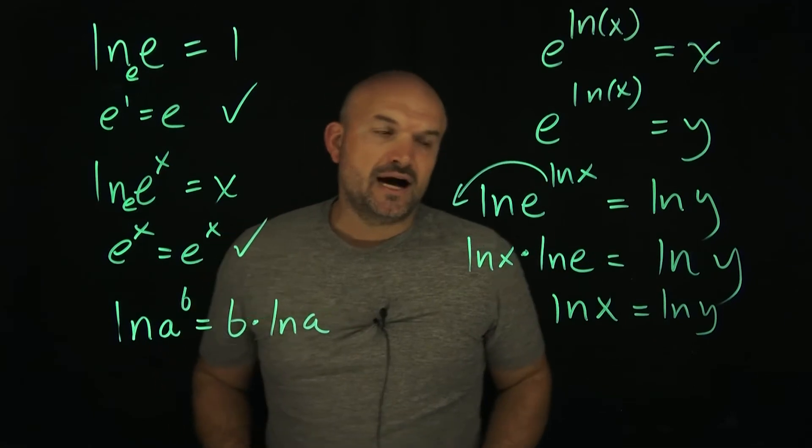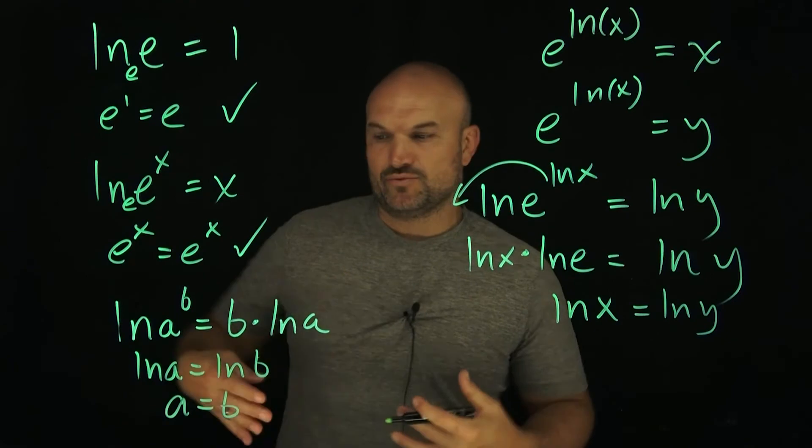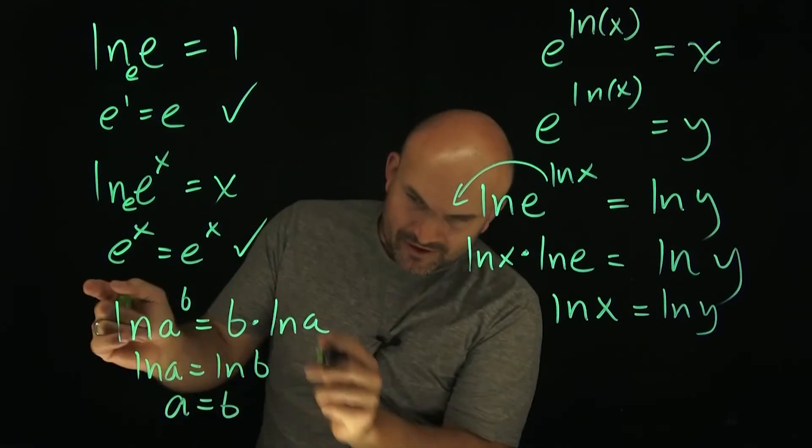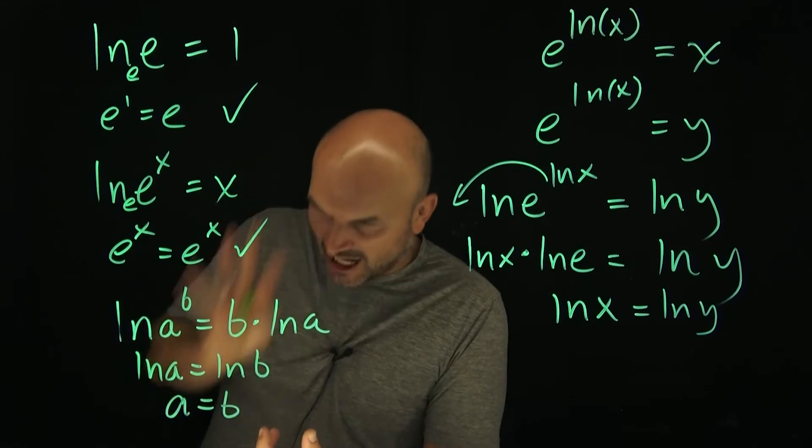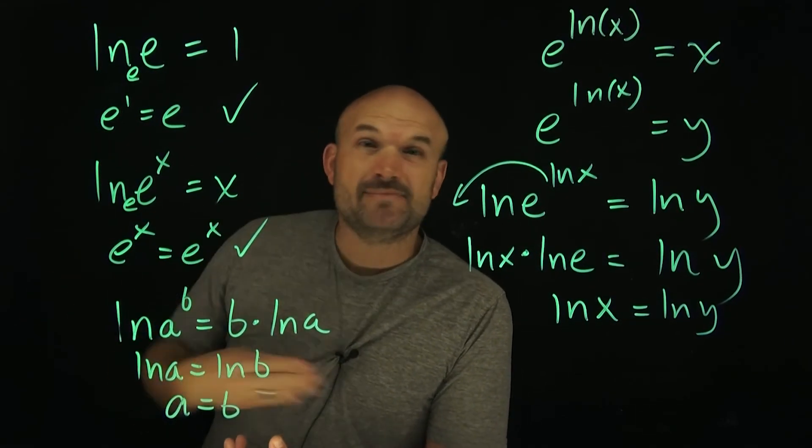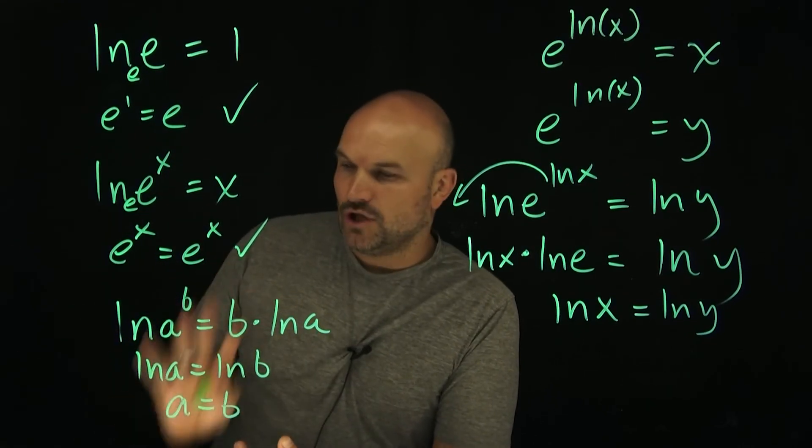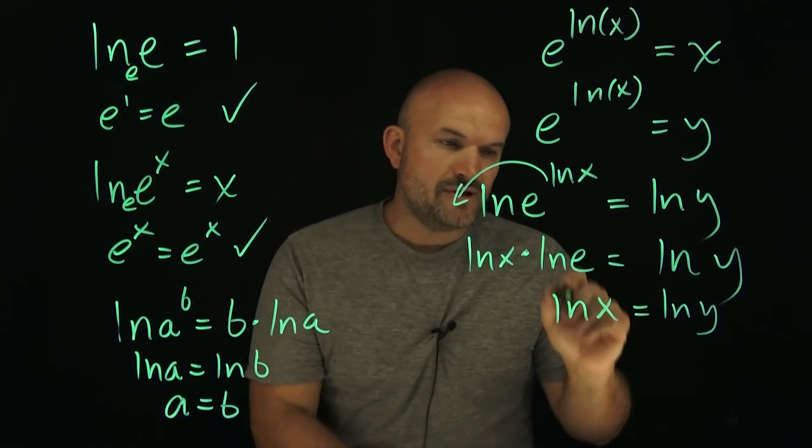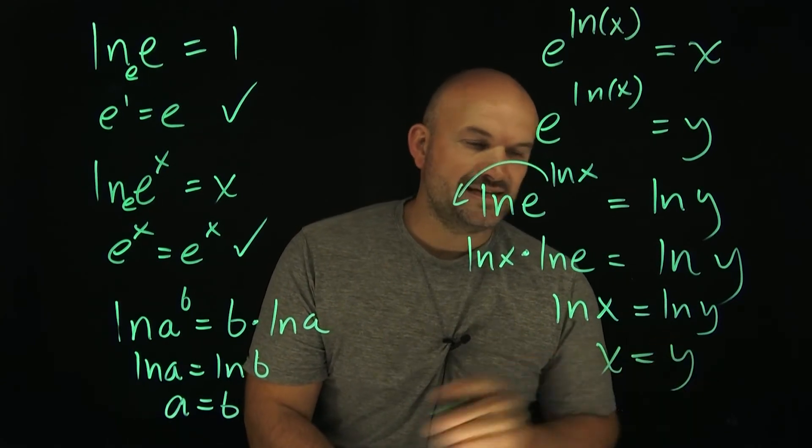Now we're going to use the one-to-one property. What the one-to-one property says is when you have an isolated logarithm equal to another isolated logarithm, meaning there's no other plus 5 or times 2 or anything else, when it's a logarithm all by itself, it doesn't matter if it's natural logarithm, base 10, base 7. As long as you have a logarithm equal to a logarithm, then their arguments are equal to each other. So in this case, ln of x equals ln of y, therefore we can say x equals y.